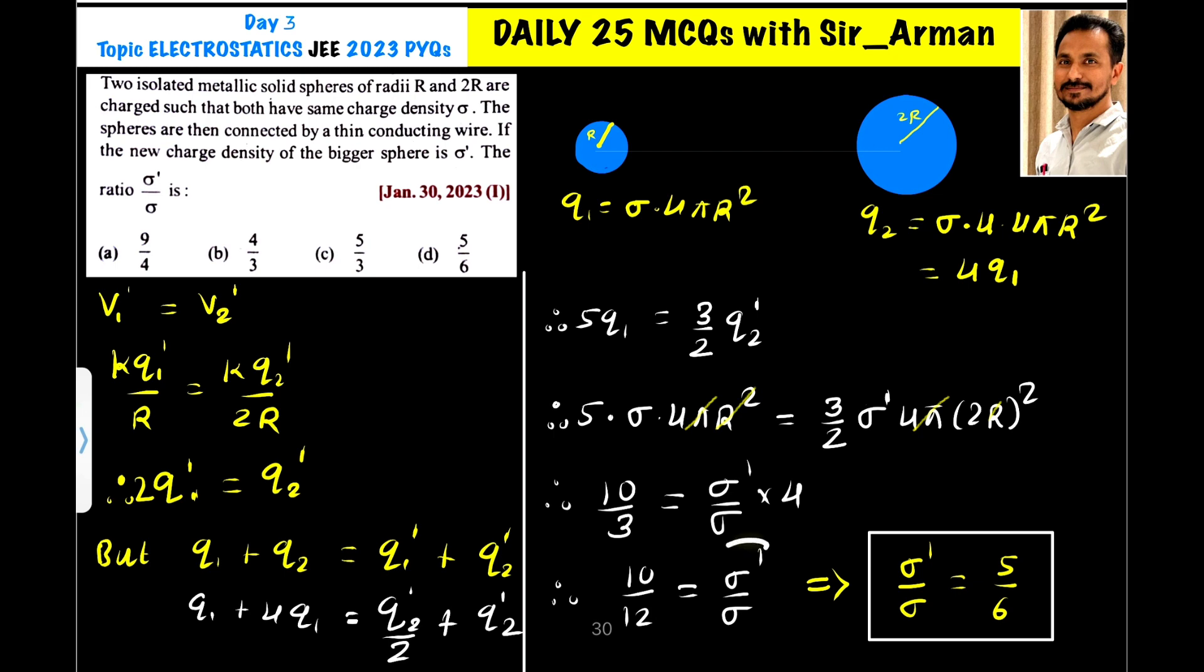We want sigma dash by sigma. So sigma dash by sigma, transferring 4 to this side, it is 10 by 12. So sigma dash by sigma is 5 by 6.